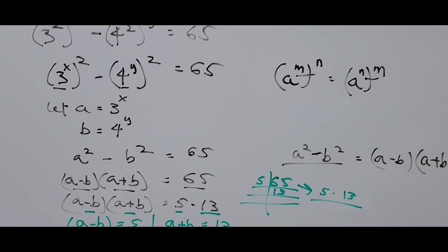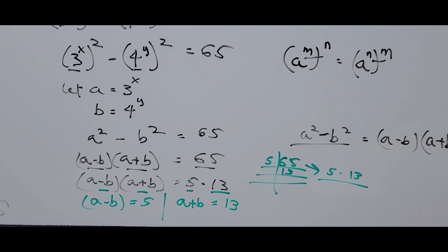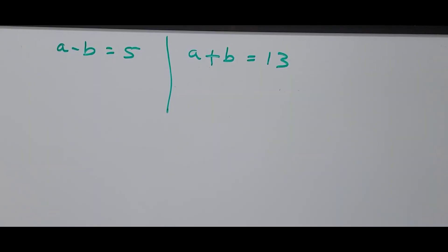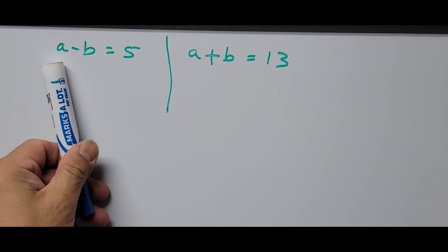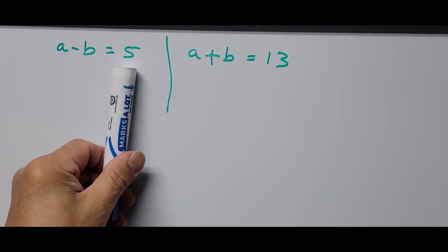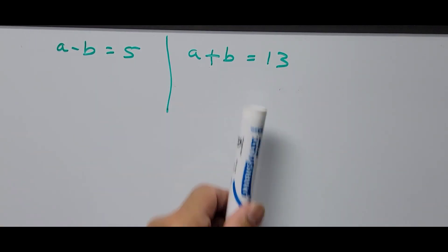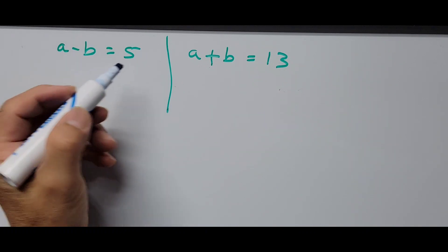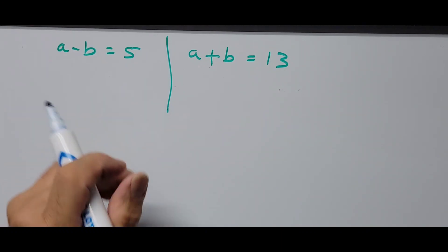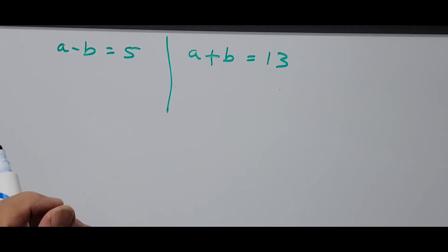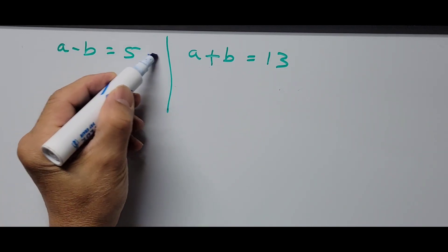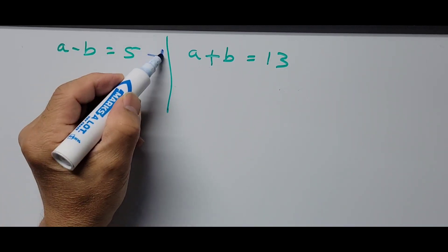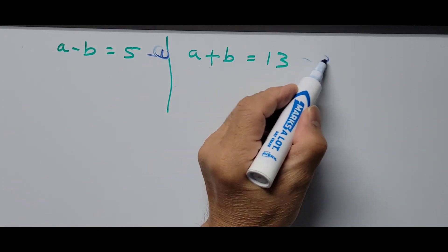So a minus b is 5 and a plus b is 13 — the bigger factor of 65. Since we have two variables and two equations, we can label these as equation 1 and equation 2.